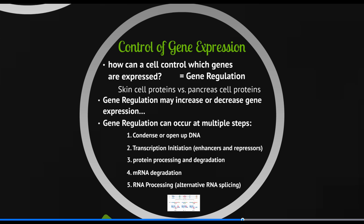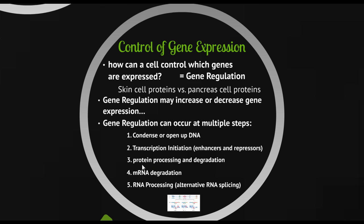Messenger RNA also degrades. Remember in our restaurant analogy, messenger RNA is a copy of the recipe, and it turns out this copy is temporary — it only lasts about an hour. Enzymes in the cytoplasm will start to break it apart. So if a cell wants to make thousands of a particular protein, it will make hundreds of copies of that messenger RNA, because each single messenger RNA can only be read a couple of times before it's thoroughly disintegrated. This gives cells fine-tuned control over which genes are expressed and to what degree.